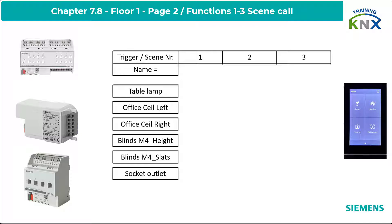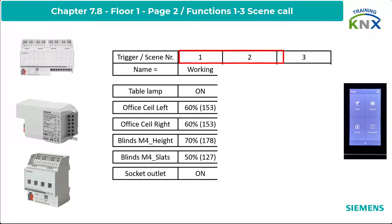The following plan is now implemented. The scene numbers are 1, 2, and 3. Scene 1: Socket Outlet on, Table Lamp on, Ceiling Lights off, Blind Height 60%, Slats 70%, Sleds 50%. Scene name: Working. Icon: Occupied.